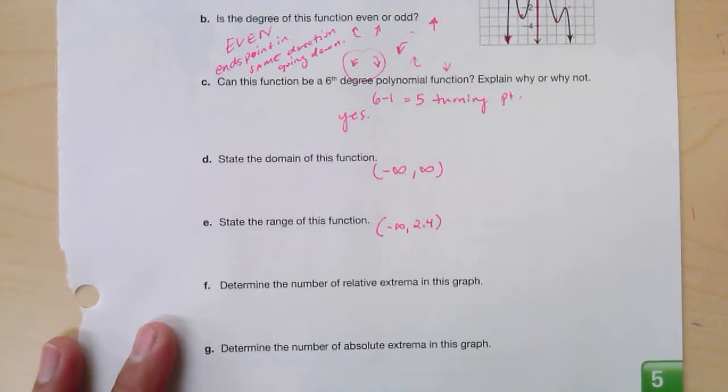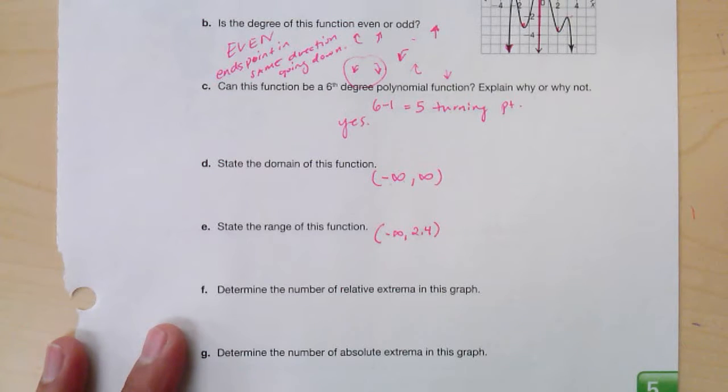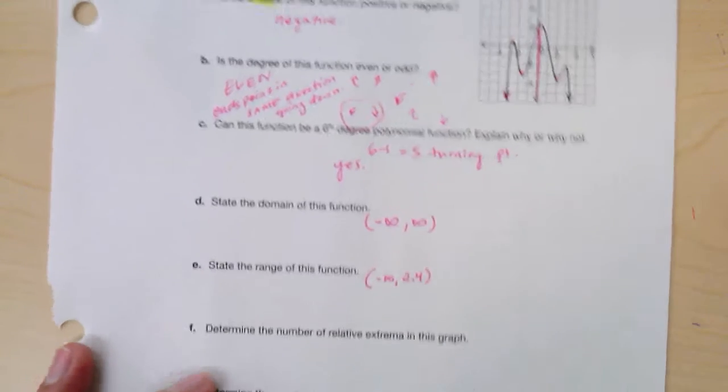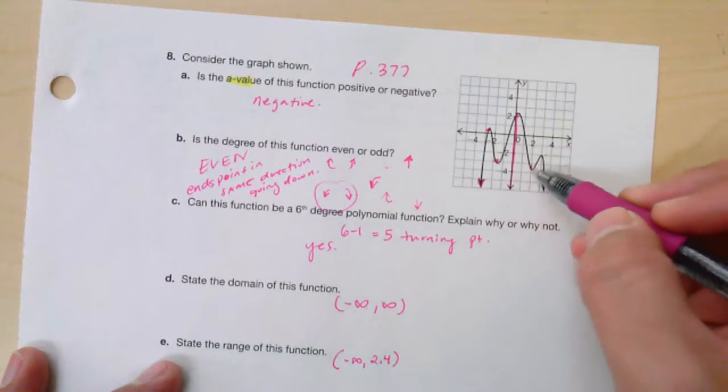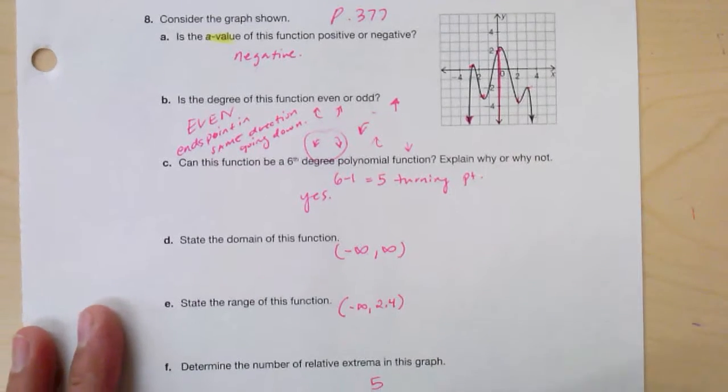Okay, determine the relative extrema in this graph. That's just the relative maximum and minimums. So I go back, I just count one, two, three, four, five, five extrema.